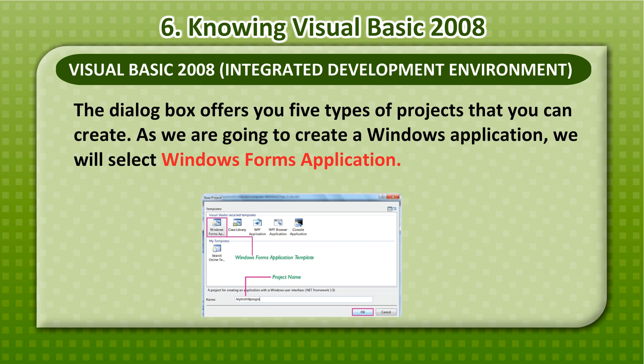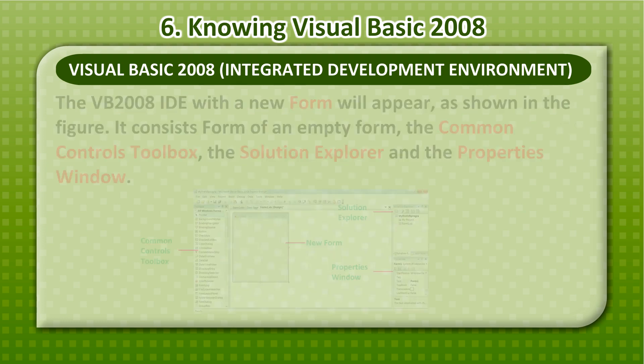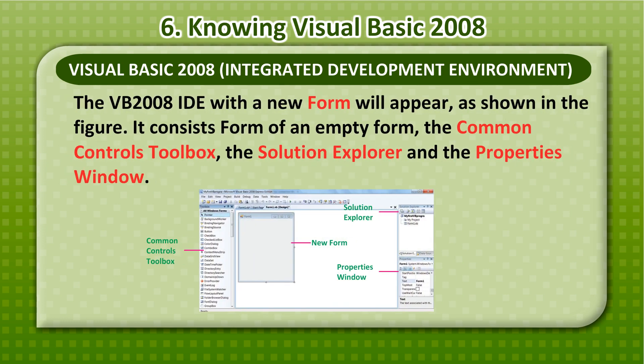The VB2008 New Project dialog box will appear. It offers you 5 types of projects that you can create. As we are going to create a Windows application, we will select Windows Form Application. At the bottom of the dialog box, you can change the default project name 'Windows Application 1' to a name you prefer, for example 'My First VB Program.' After renaming the project, click OK to continue.